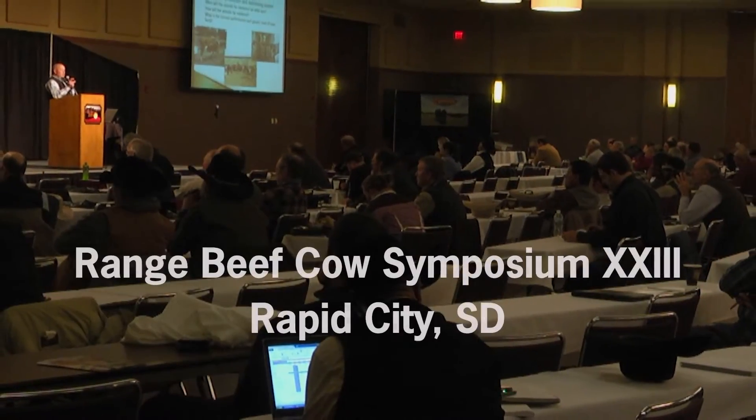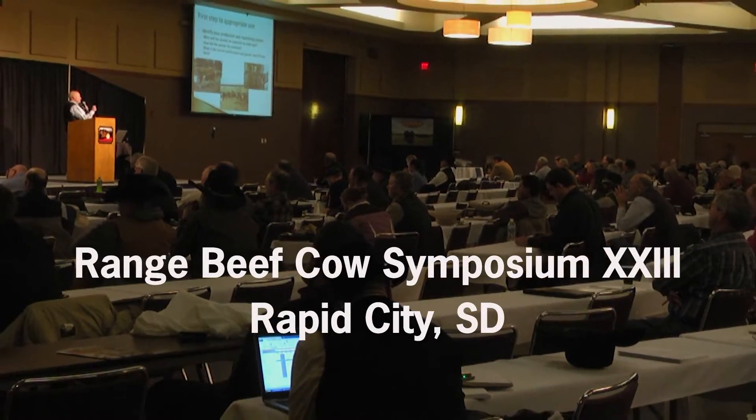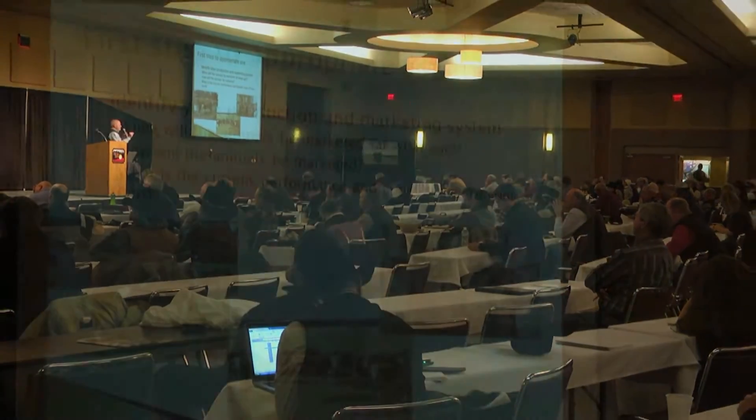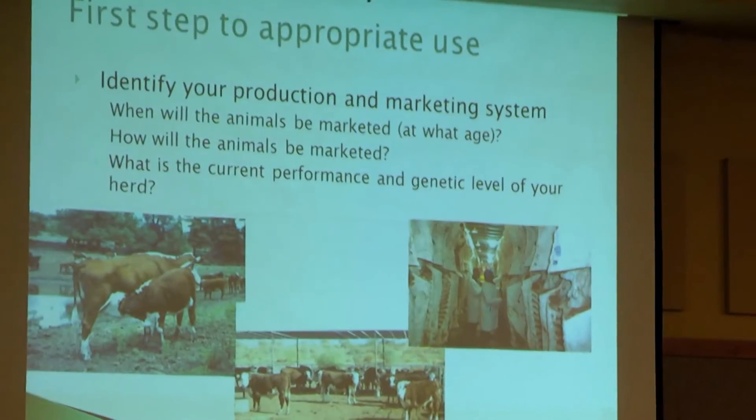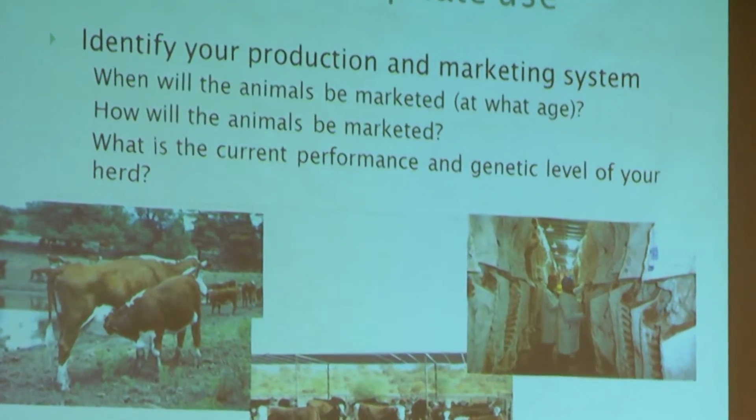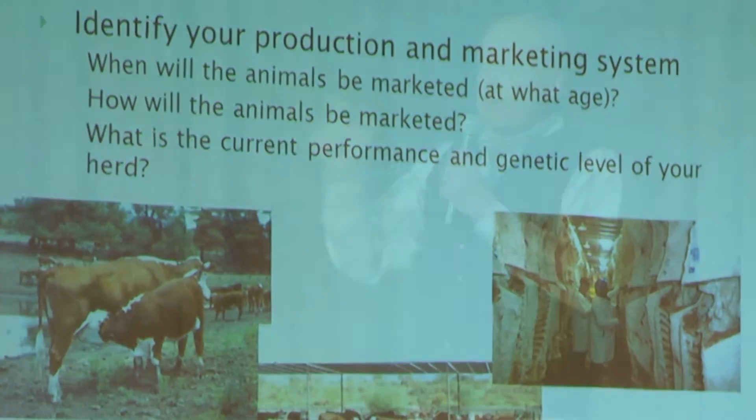There are a couple of approaches producers can use to simplify using EPDs to make good, profitable selection decisions. One of those is to first outline their production system and look forward to the future — how are they planning on marketing animals? Because once we know how animals are going to be marketed, at what age and stage of production, we have a much better idea of what traits and therefore which EPDs a producer should look at.